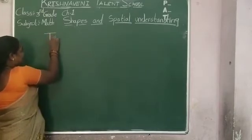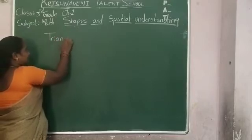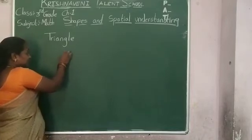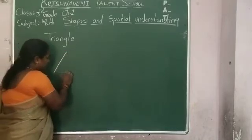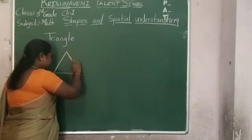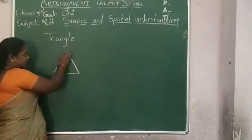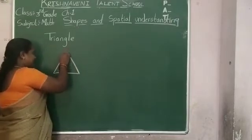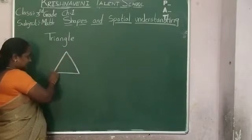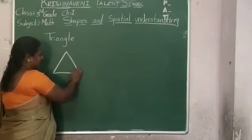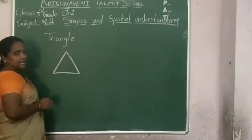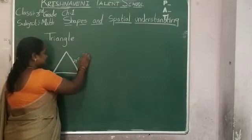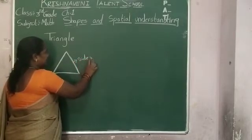First one is triangle. What is a triangle? A triangle is a simple closed figure bounded by 3 line segments. This is one line segment, this is another line segment, and here is another line segment. These line segments are called sides.